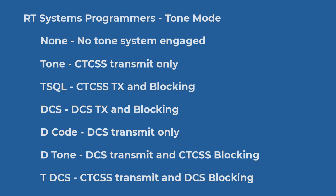The RT-Systems programmers have a column called Tone Mode. We call this the switch that turns the tone on. In that column, for most radios, you have: None, which is no tone system engaged; Tone, which is CTCSS transmit only; Tone Squelch, which is CTCSS transmit and a blocking CTCSS on your radio; and DCS, which is a DCS code transmit and a blocking signal on your radio.